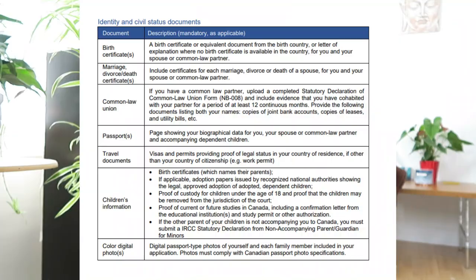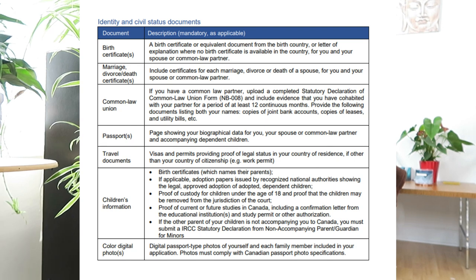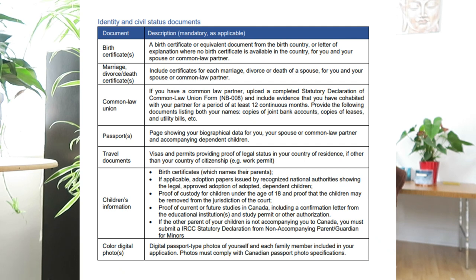There are different parts of the documents you need to submit. The first part is about identity and civil status documents, which include birth certificates for you and your spouse or common-law partner, and if you have a dependent child, marriage, divorce, or death certificates. If you have a common-law partner, you need to upload a completed Statutory Declaration of Common Law Union form NB-008, and include evidence that you have cohabited with your partner for at least 12 continuous months — such as copies of joint bank accounts, leases, utility bills, or other documents listing both names.